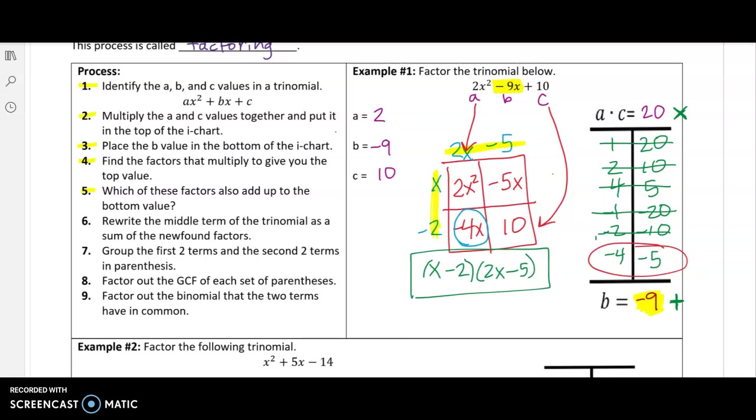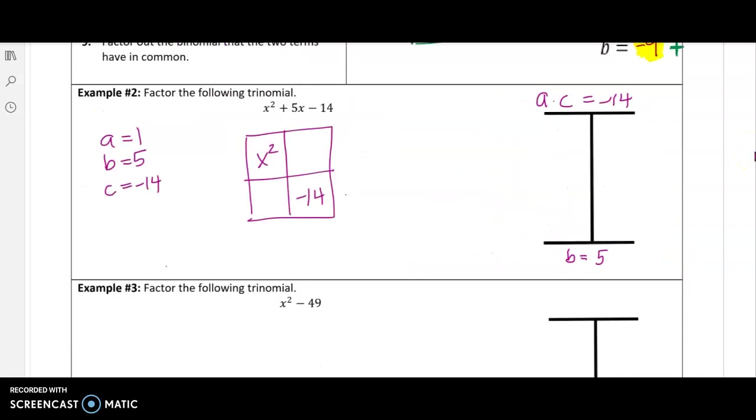Let's try another one using the reverse box method. So it looks like I have already set up a little bit for us. The a value is one, the b value is five, and the c value is negative 14. I started our box with the x squared in the upper left hand corner and the constant in the bottom right hand corner. And I also set up our eye chart. So once again, in the eye chart, we're trying to find numbers that multiply to give me negative 14.